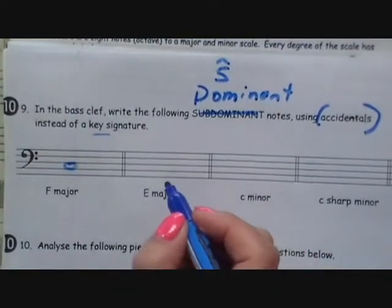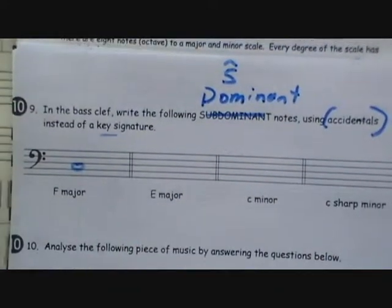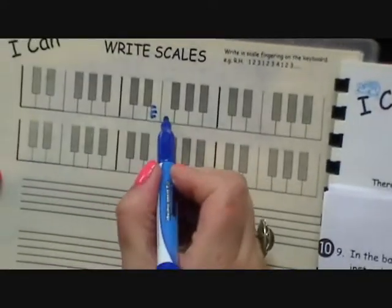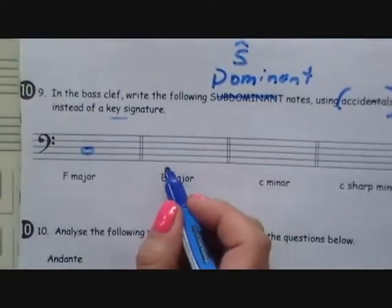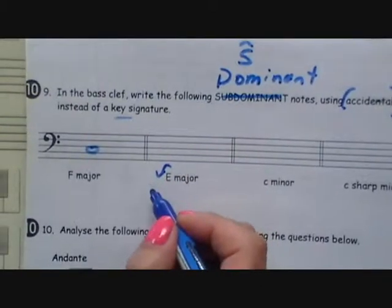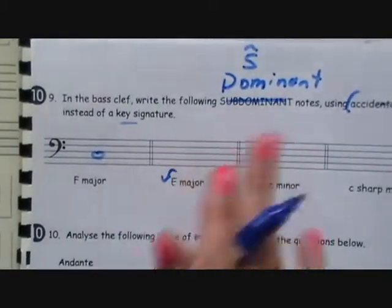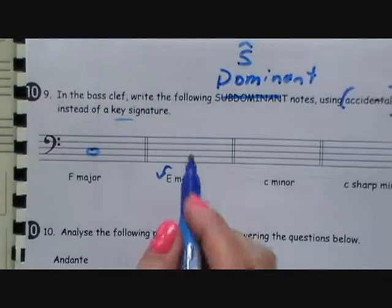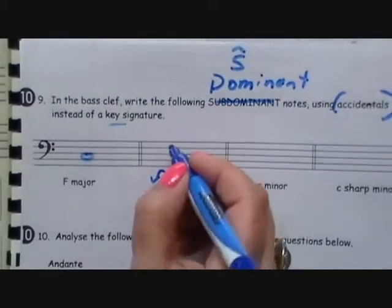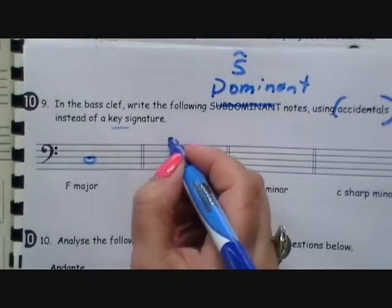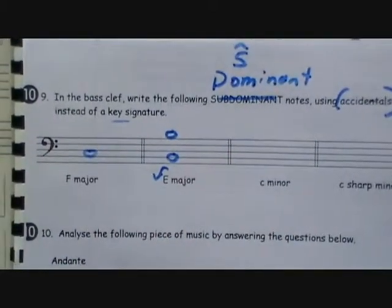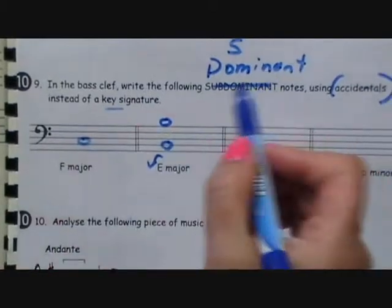Let's do the dominant of E major. Take it from E — dominant is the 5th: 1, 2, 3, 4, 5 — we land on B. In E major, what comes before E is D. Using 'Father Charles goes down,' B isn't affected. So the note is B. You can put it here or here for B — it doesn't matter where you put the note, as long as it's the note they're asking for.